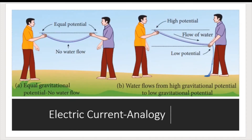To understand electric current, we will use a little analogy, because we cannot see the electric current. Consider a small experiment: if you fill a water pipe with water and keep both ends at the same height, they will have equal gravitational potential.